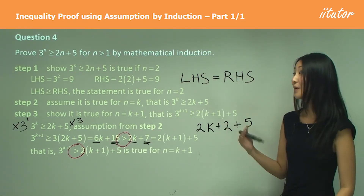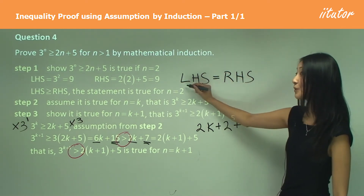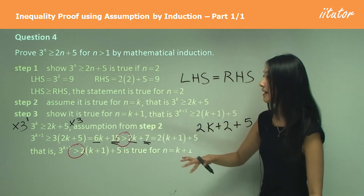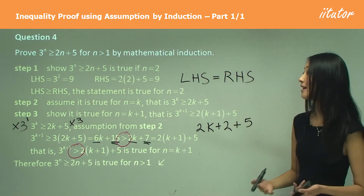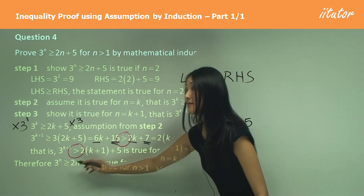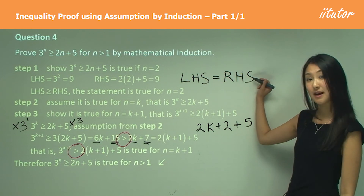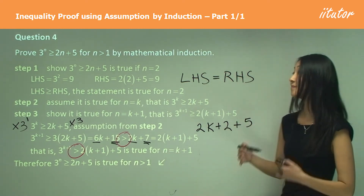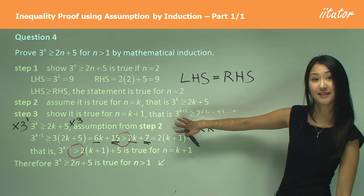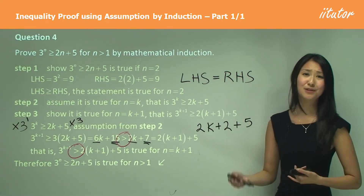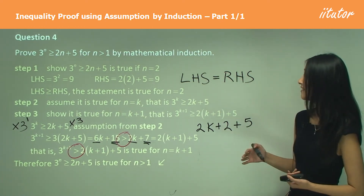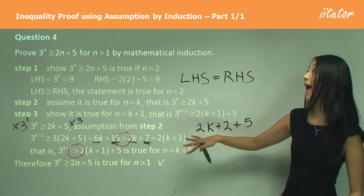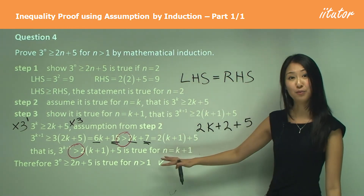So where does the 'equal to' come from? Luckily, in Step 1 we proved that the left hand side equals the right hand side. By combining Step 1 and Step 3, we can make the formal conclusion: therefore 3 to the power of n is greater than — from Step 3 — or equal to — from Step 1 — 2n plus 5, for n greater than 1. Starting from the assumption in Step 3 is a really good approach when you're unsure what to do, and for greater than or equal to proofs, you may need both steps together.